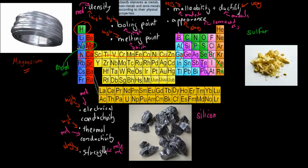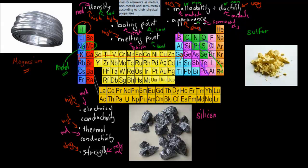For the non-metal example we have sulfur. Sulfur's density tends to be quite low. It tends to have a low boiling point and a lower melting point, especially compared to metals. It is not malleable — so non-malleable — and non-ductile, which means we can't make it into wire or sheets, because it is quite brittle. Its appearance tends to be dull — not shiny compared to the other types. It has low electrical conductivity, meaning it doesn't conduct electricity, low thermal conductivity meaning it doesn't conduct heat, and overall low strength.